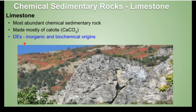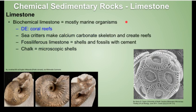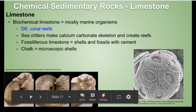Here's a picture of some limestone in beautiful Logan Canyon. Some biochemical limestone is generally made mostly by marine organisms. A good guess for a depositional environment for this type of limestone is coral reefs. Coral reefs will often produce fossiliferous limestone, which is a shell and fossil hash with cement and calcium carbonate mud in between the fossil shells. Another type of biochemical limestone is chalk, which is made up of microscopic shells.